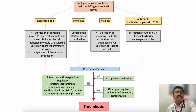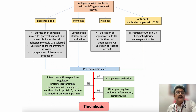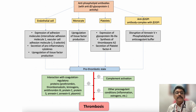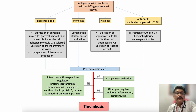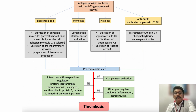Thrombosis is a major problem in antiphospholipid antibody syndrome. Endothelial cell damage can occur, monocyte upregulation of tissue factor production, platelets can also produce thrombotic events, and anti-beta-2-GPI antibody complexes can also produce thrombosis. These are all pro-thrombotic states that lead to complement activation and other procoagulant conditions like inflammation, estrogens, pregnancy, and trauma. All these factors ultimately lead to thrombosis.